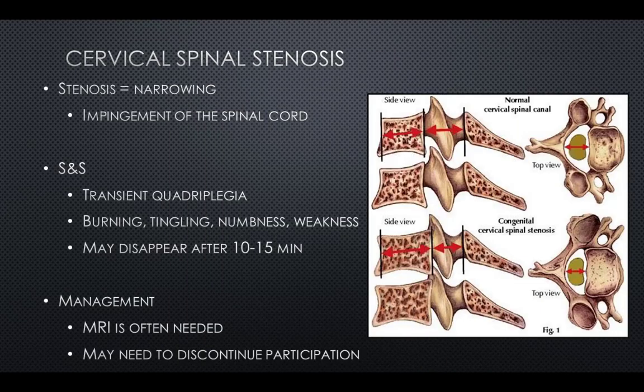Cervical spinal stenosis is the narrowing of the cervical canal in the neck. The spinal cord may be pinched or impinged when the spinal column narrows. Common signs and symptoms include transient quadriplegia — paralysis of all four extremities that comes and goes — burning, tingling, numbness, and weakness, with symptoms possibly disappearing after 10 to 15 minutes. An MRI is often needed to determine management, and if spinal stenosis is discovered, an athlete may need to discontinue participation, especially in contact sports such as lacrosse, rugby, or American football.